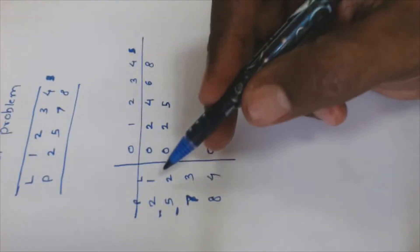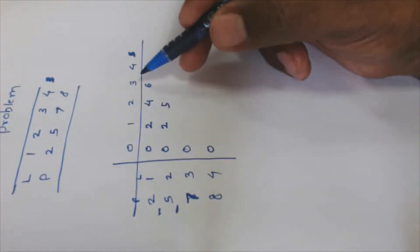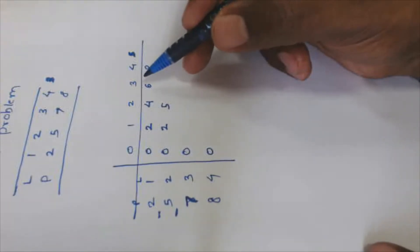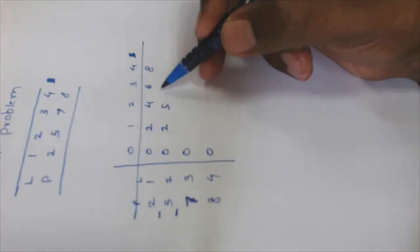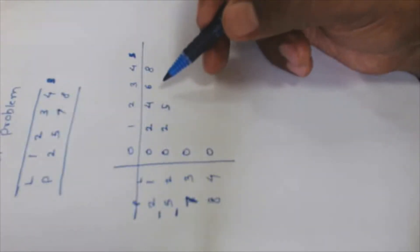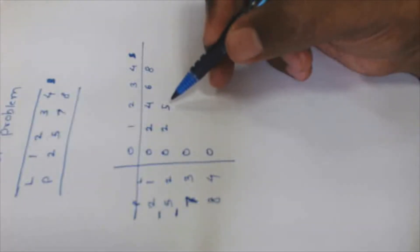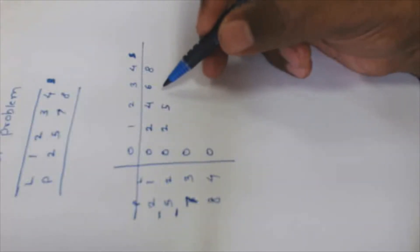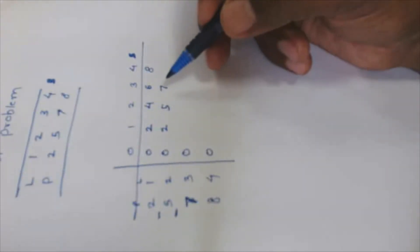With a rod of length three and two options available, we sell a rod of length two for five and a rod of length one for two. Five plus two equals seven, so the maximum profit for a rod of length three is seven.